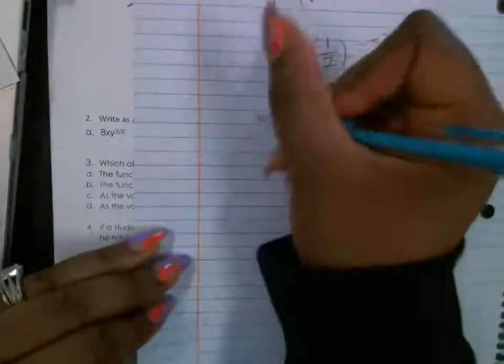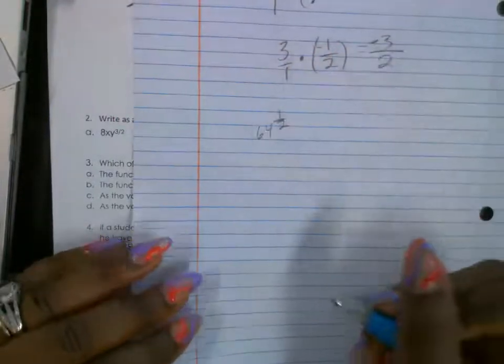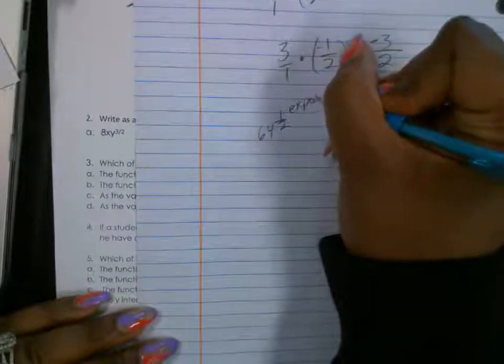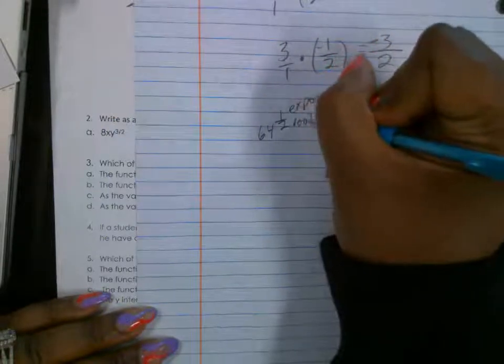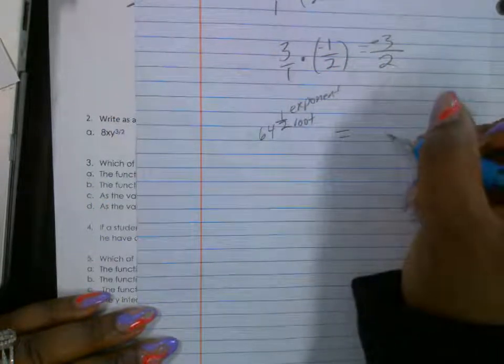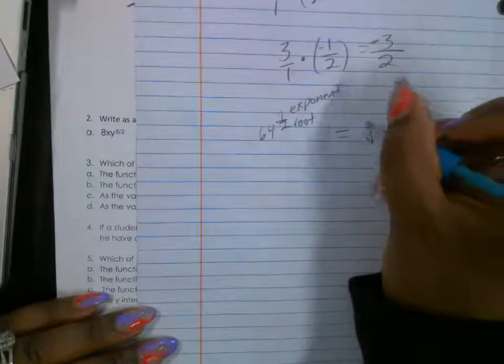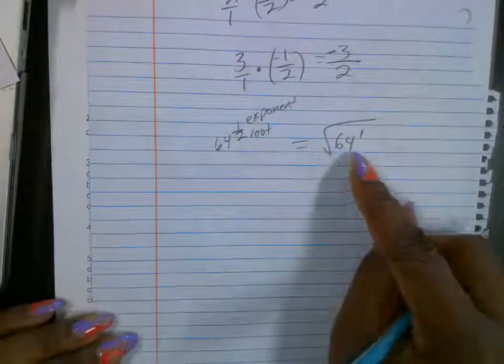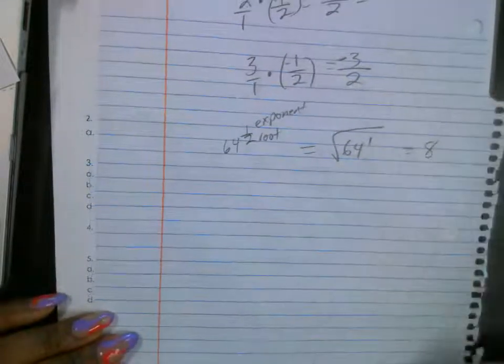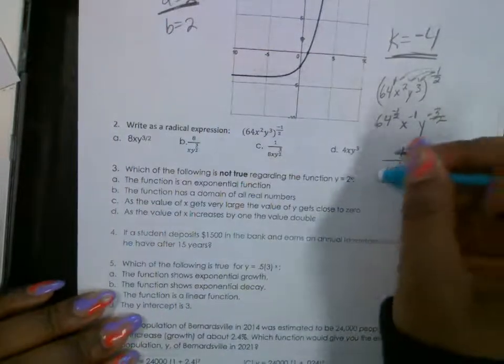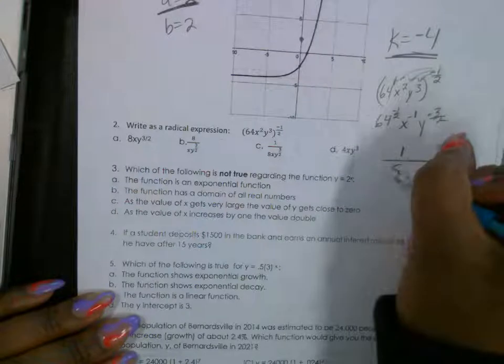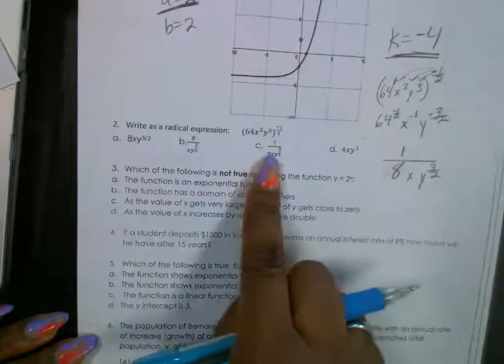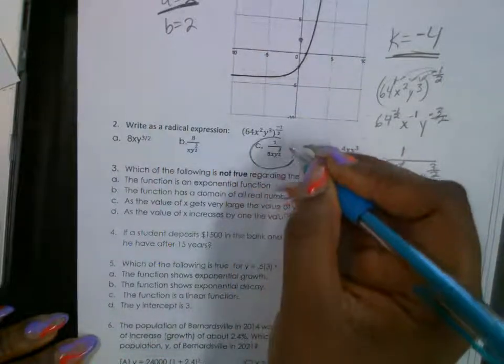All right. So when you have an exponent as a fraction, 64, one half, the top number is the exponent. And the bottom number is the root. So another way to write this is to say 64 to the first power square root. Okay. Because it's two square root. So the square root of 64 is eight. So we're going to replace this with eight. Okay. This is okay. And that's okay. We'll just keep it like that. All right. So our answer here is going to be C.